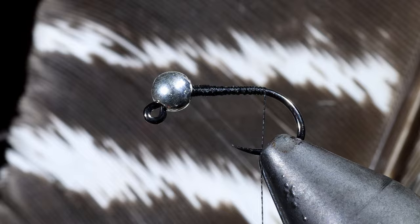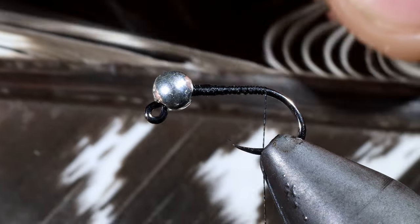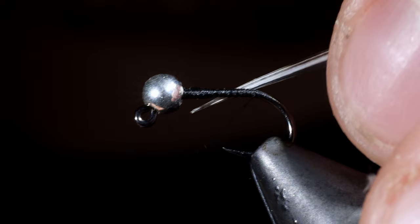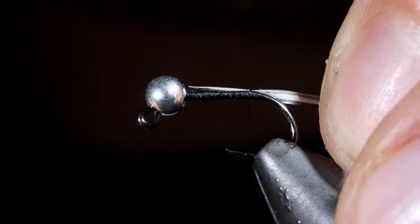We will then select a biot. Here I'm using the lead wing of a turkey. We'll select a single biot and secure that to the back of our fly.